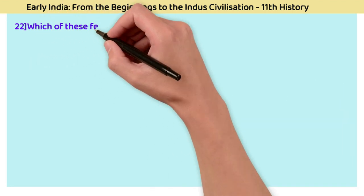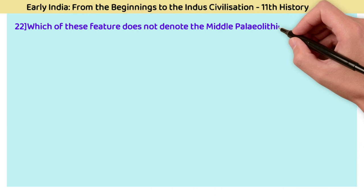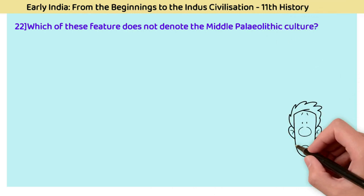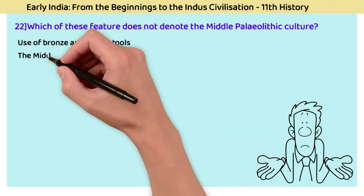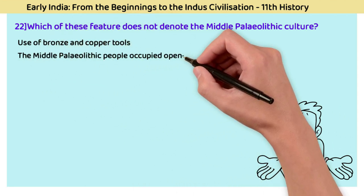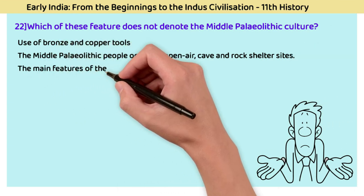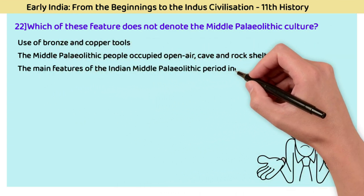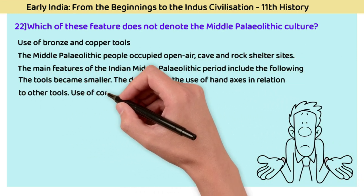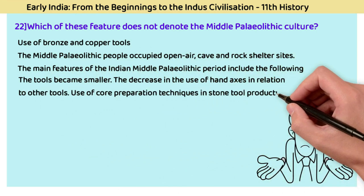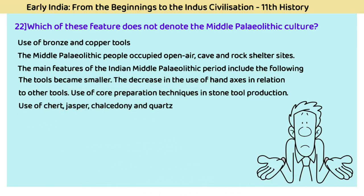Question 22: Which feature does not belong to the Middle Paleolithic culture? The answer is use of bronze and copper tools. The Middle Paleolithic people occupied open-air, cave, and rock shelter sites. Main features of the Indian Middle Paleolithic period include tools becoming smaller, decreased usage of hand axes, use of core preparation techniques in stone tool production, and use of chert, jasper, chalcedony, and quartz as raw materials.